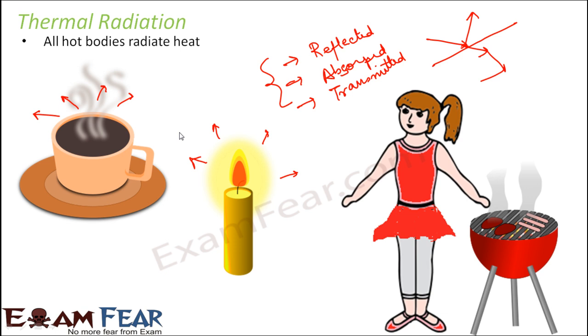All objects which are hot will radiate heat in the surroundings. This heat which is radiated, when it falls on some other object, some part of it will get reflected, some part will get absorbed, some part will get transmitted. That is how the concept of radiation works. If an object absorbs a large amount of heat, its temperature will increase and therefore it will tend to become hotter.